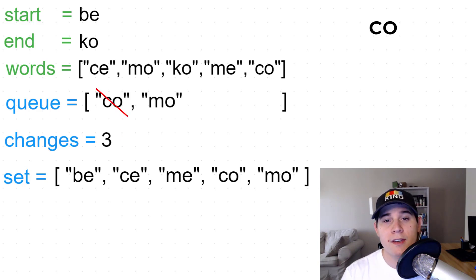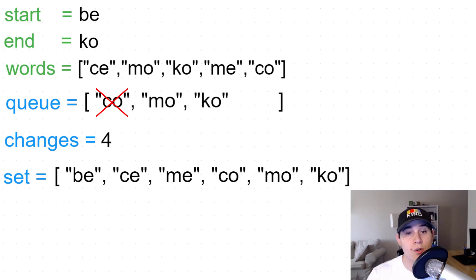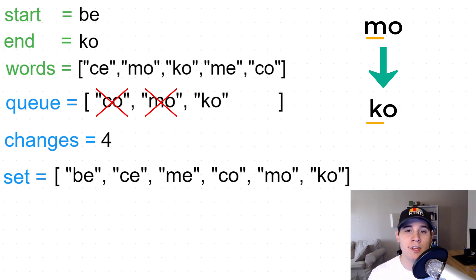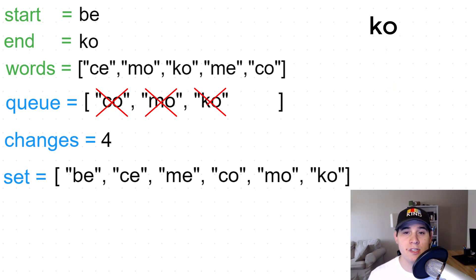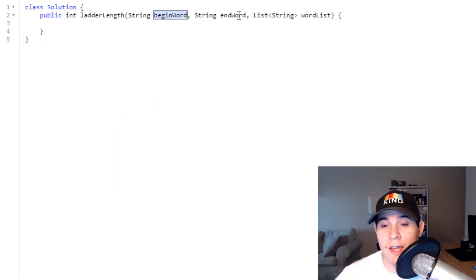We pull 'co' from our queue. We can get from 'co' to 'ko' by changing c to k, so we add 'ko' to our queue and set, and increment changes to four. We then pull 'mo' — we can get from 'mo' to 'ko' by changing m to k, but 'ko' is already in our set. Finally, we pull 'ko' from our queue — that is our end word. Once we pull from our queue and it equals our end word, we've found the shortest path sequence, so we return four.